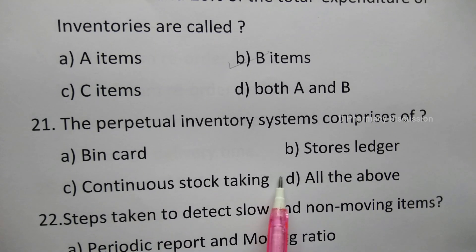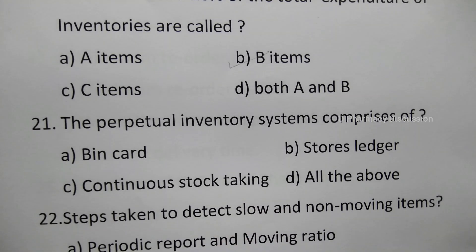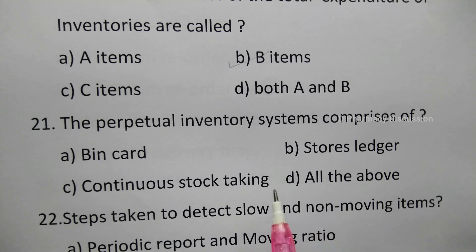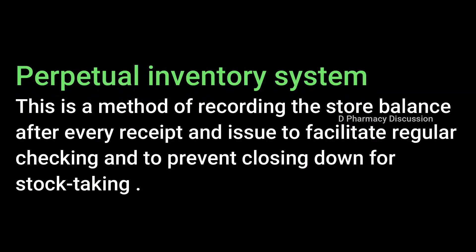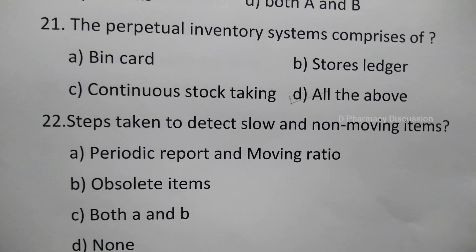Question 21: The perpetual inventory system comprises of — option A: bin card, B: store ledger, C: continuous stock taking, D: all the above. The correct answer is option D, all the above. The perpetual inventory system is a method of recording the store balance after every receipt and issue, to facilitate regular checking and to prevent closing down of stock taking.